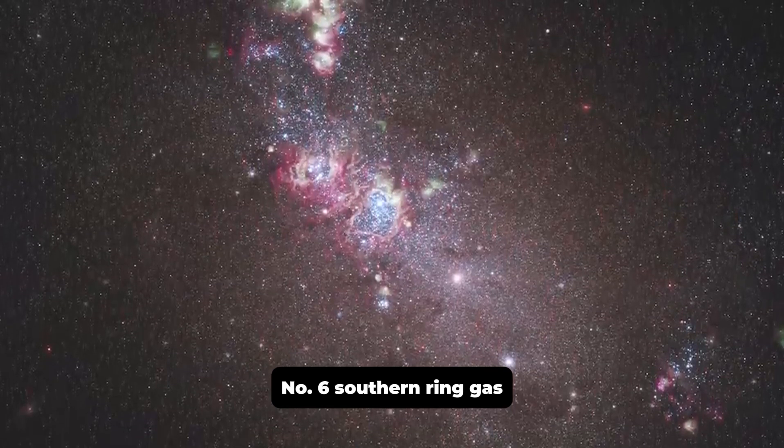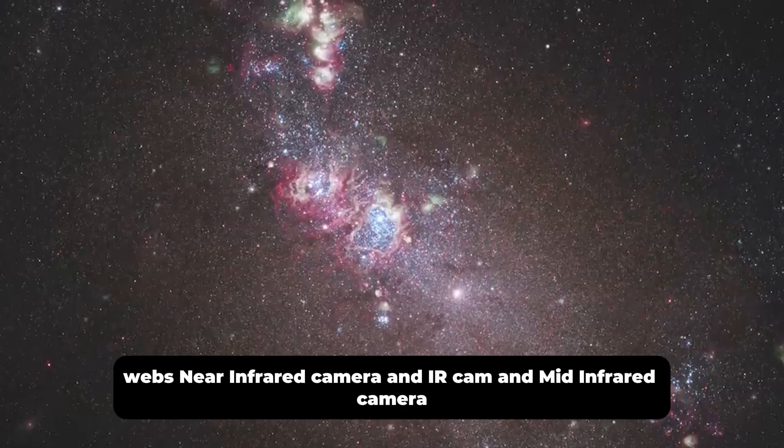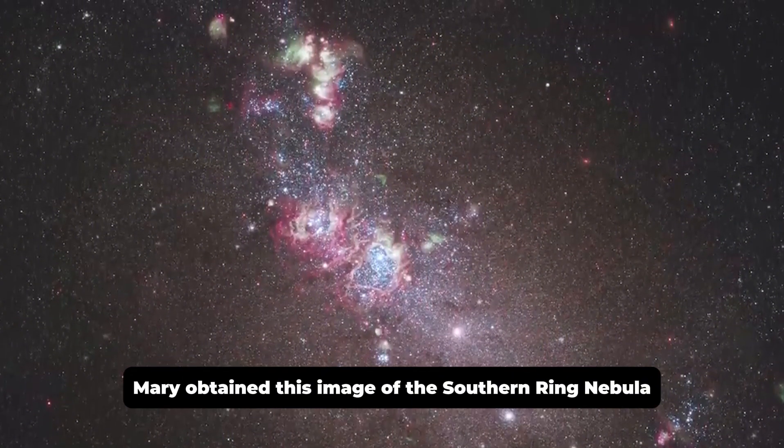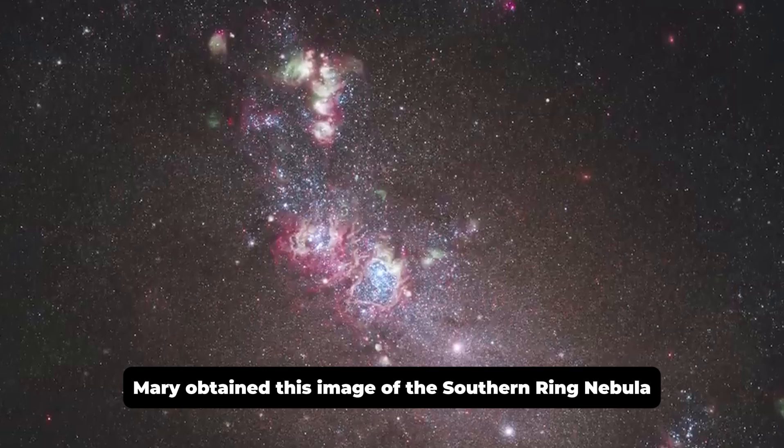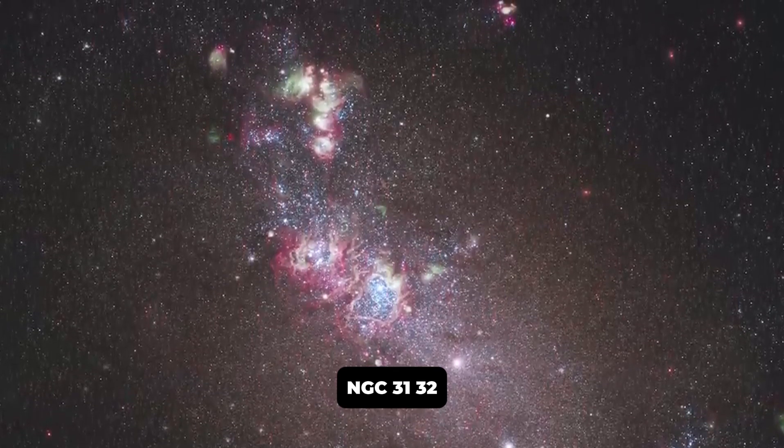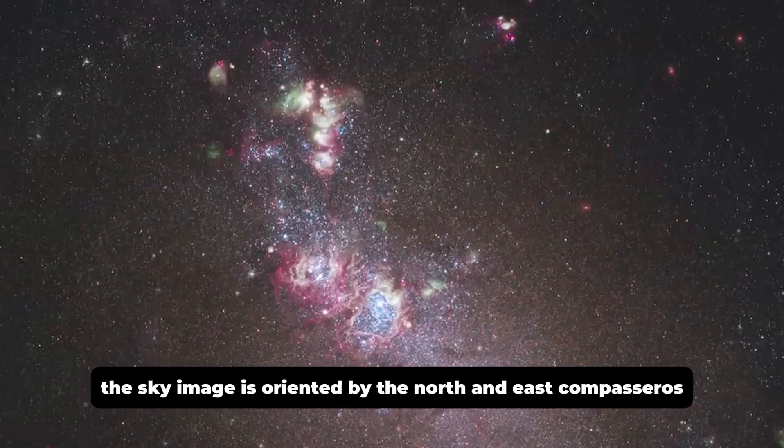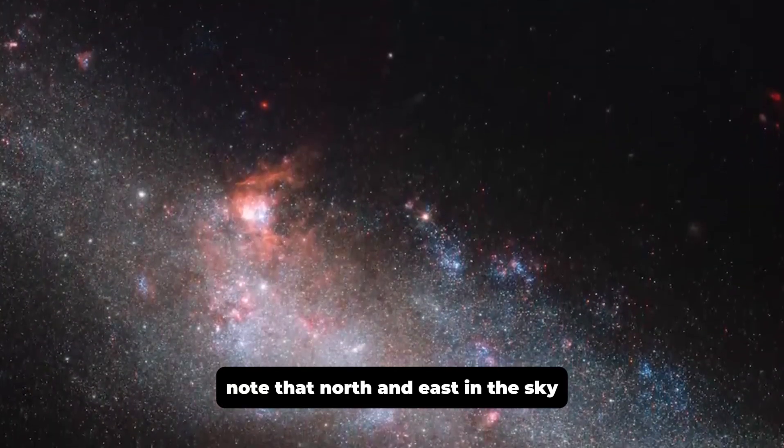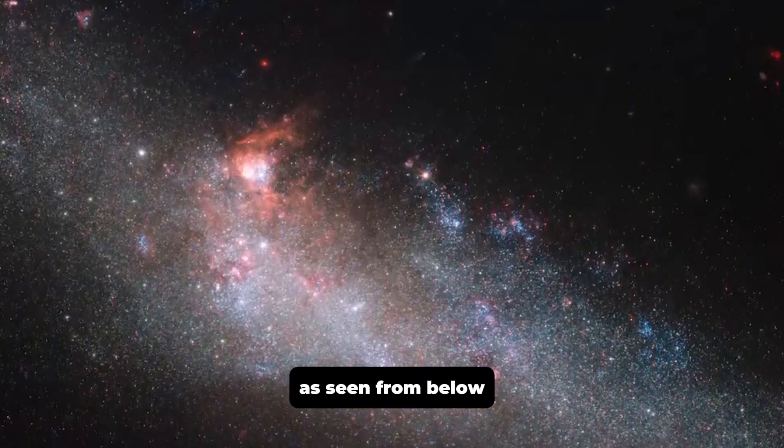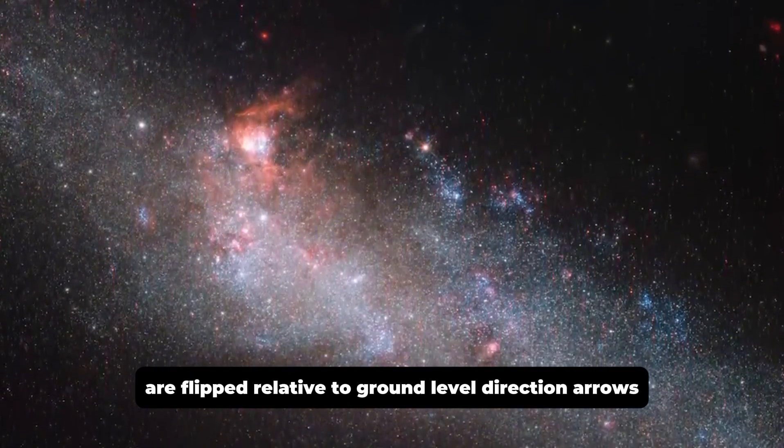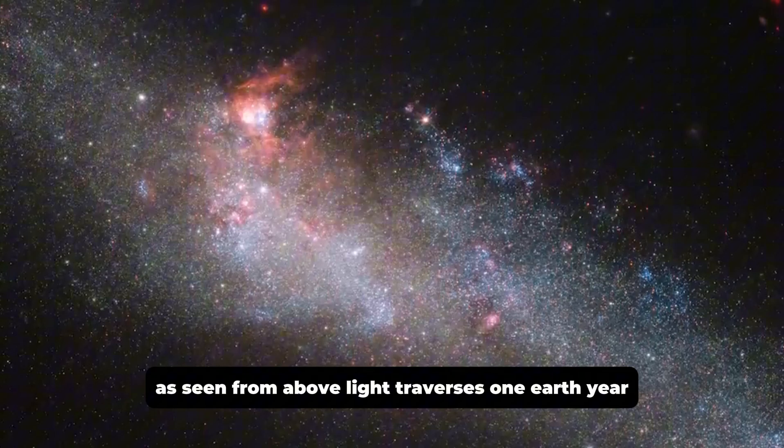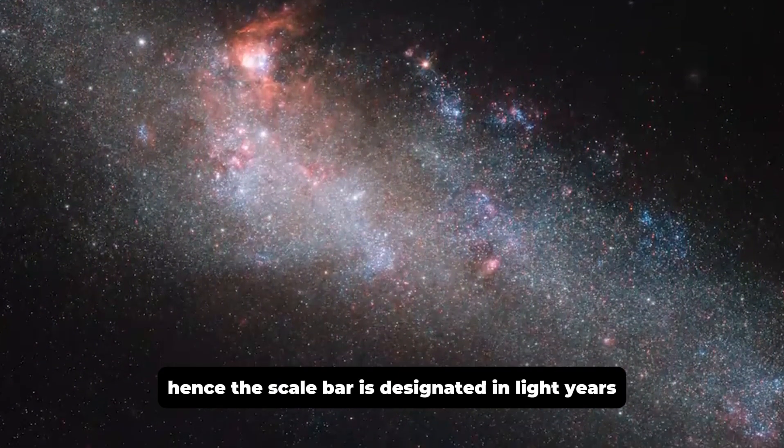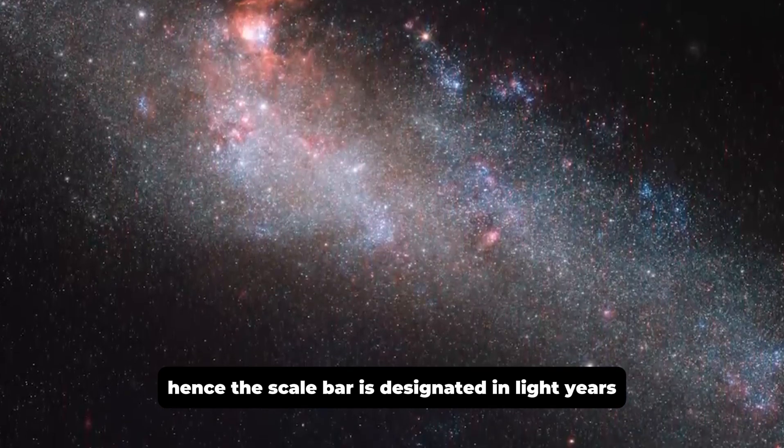Number six, southern ring gas. For comparison, Webb's near-infrared camera, NIRCam, and mid-infrared camera, MIRI, obtained this image of the southern ring nebula, NGC 3132. The sky image is oriented by the north and east compass arrows. Note that north and east in the sky, as seen from below, are flipped relative to ground-level direction arrows as seen from above. Light traverses one Earth year. Hence, the scale bar is designated in light-years. Light travels the length of the scale bar in 0.25 of a year.